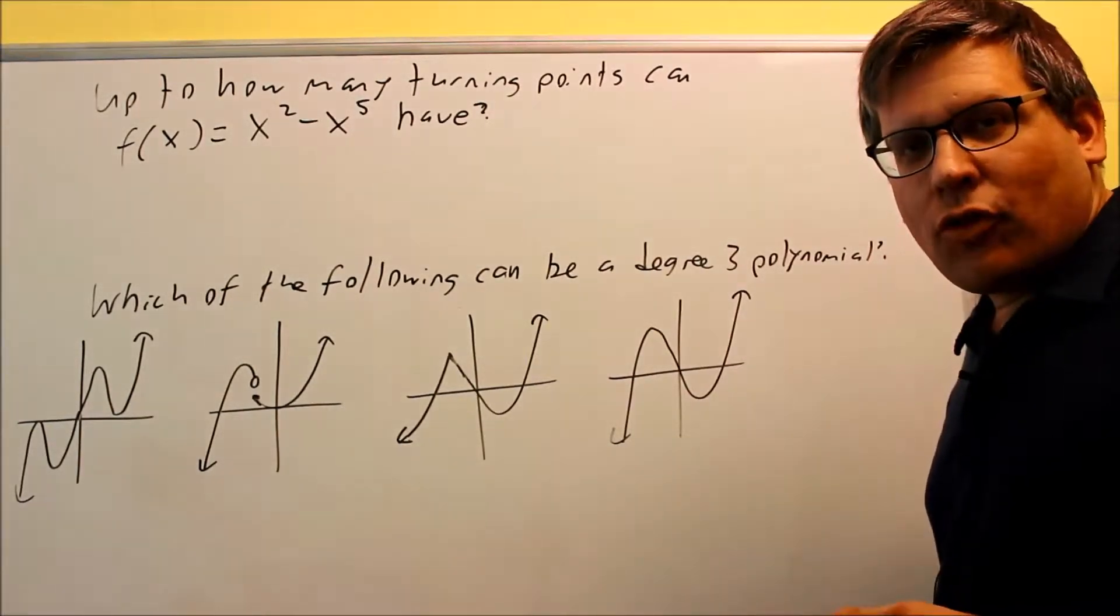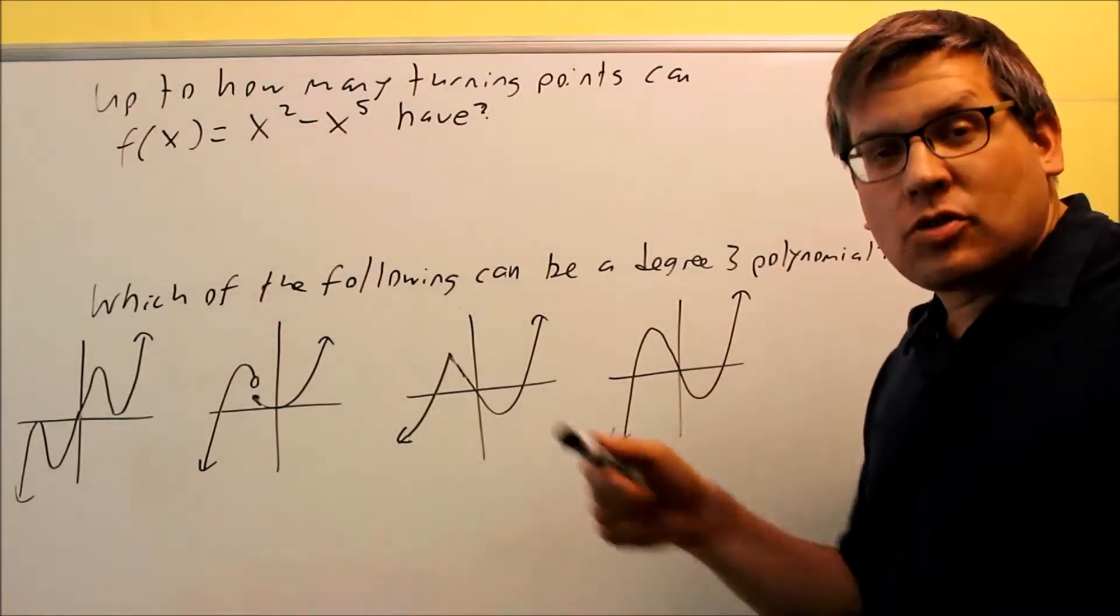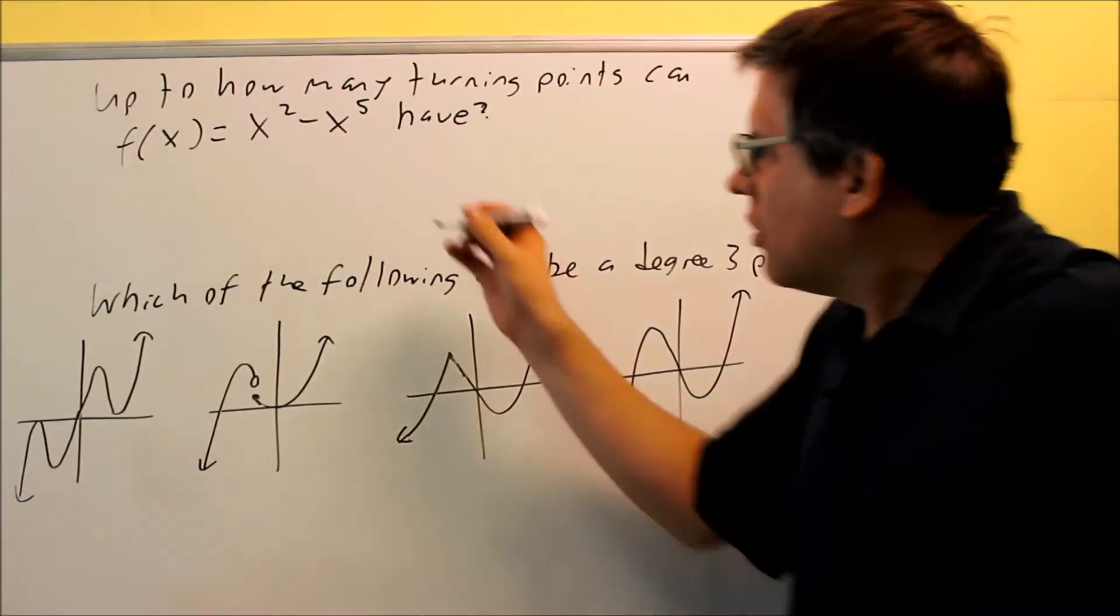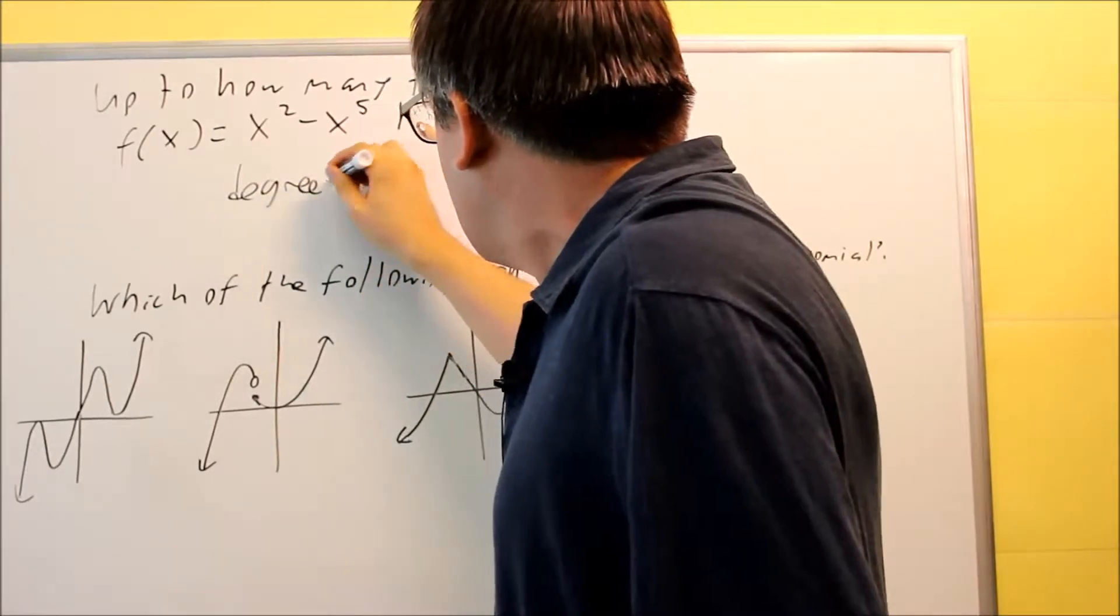Okay, so the formula for the number of turning points is it's always n minus 1 turning points, where n is the degree. So for this one, my degree is 5.